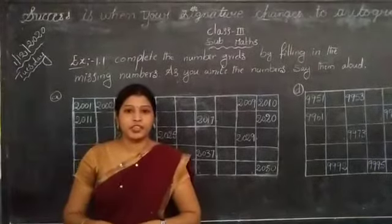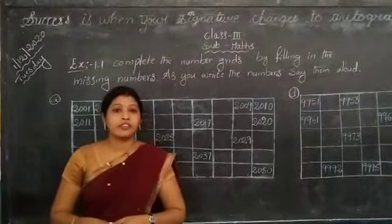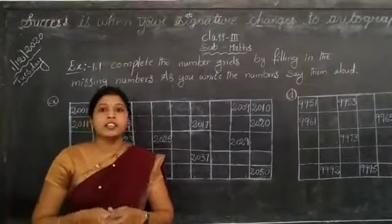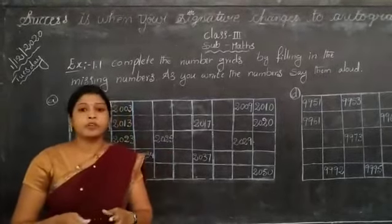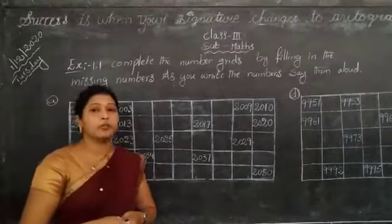Hi children, good morning. In the previous classes, we have already learned four-digit numbers and numbers greater than 1000 and counting in 1000. Today I am going to explain exercise 1.1.